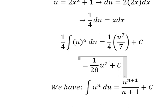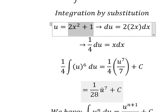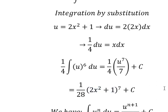Now we substitute back. u is 2x² + 1, so the final answer is 1/28 times (2x² + 1)⁷ plus C. This is the end. Thank you for watching.